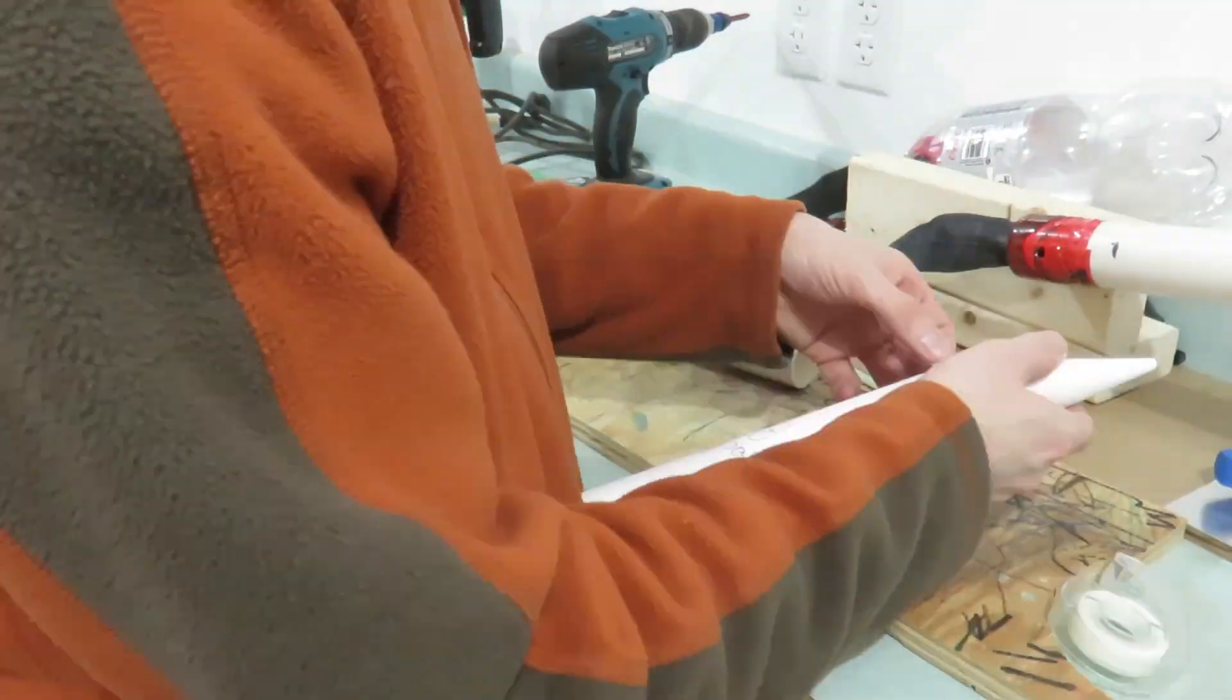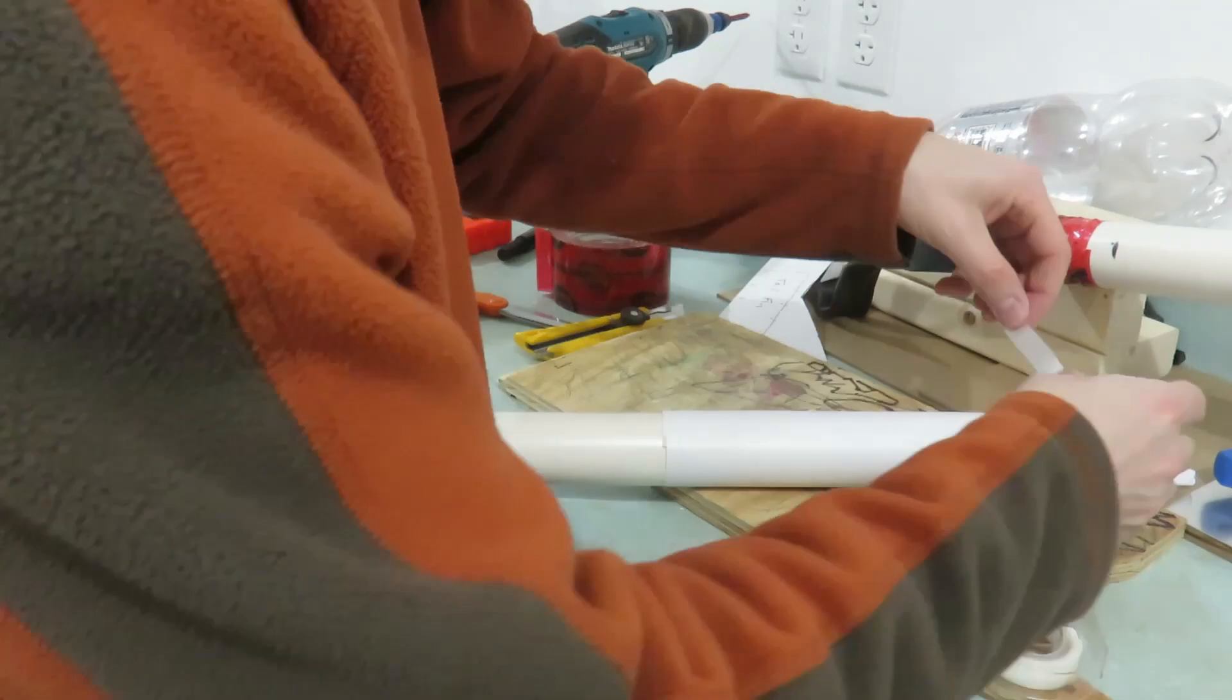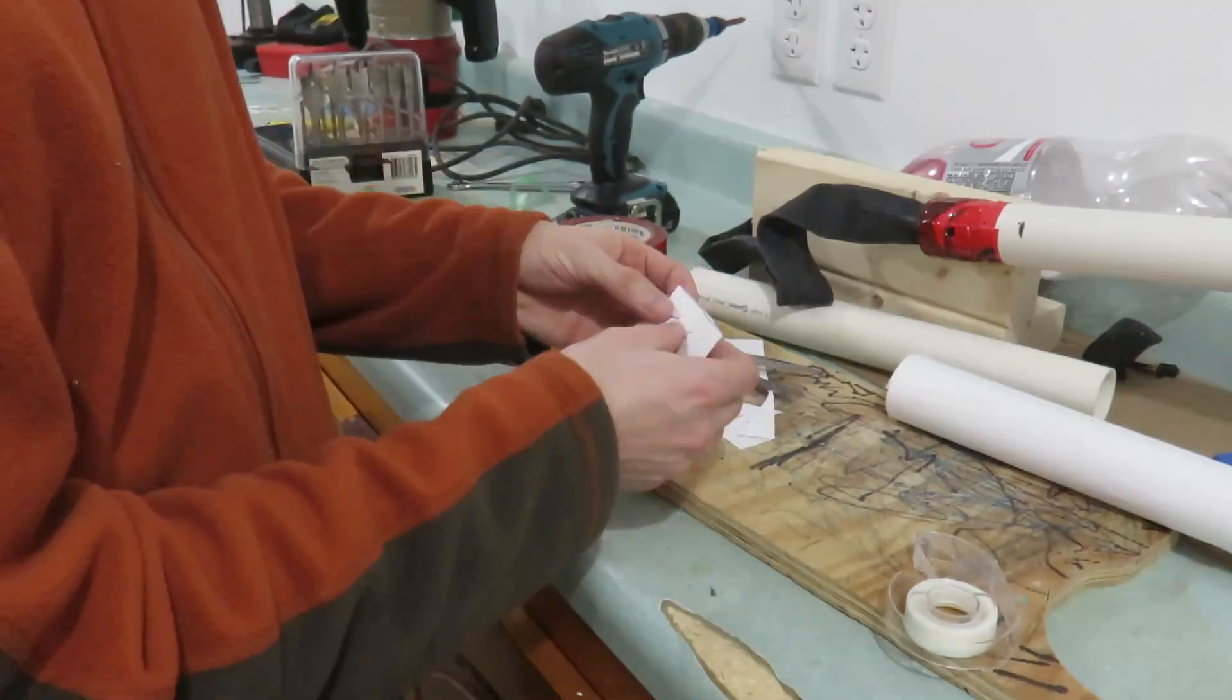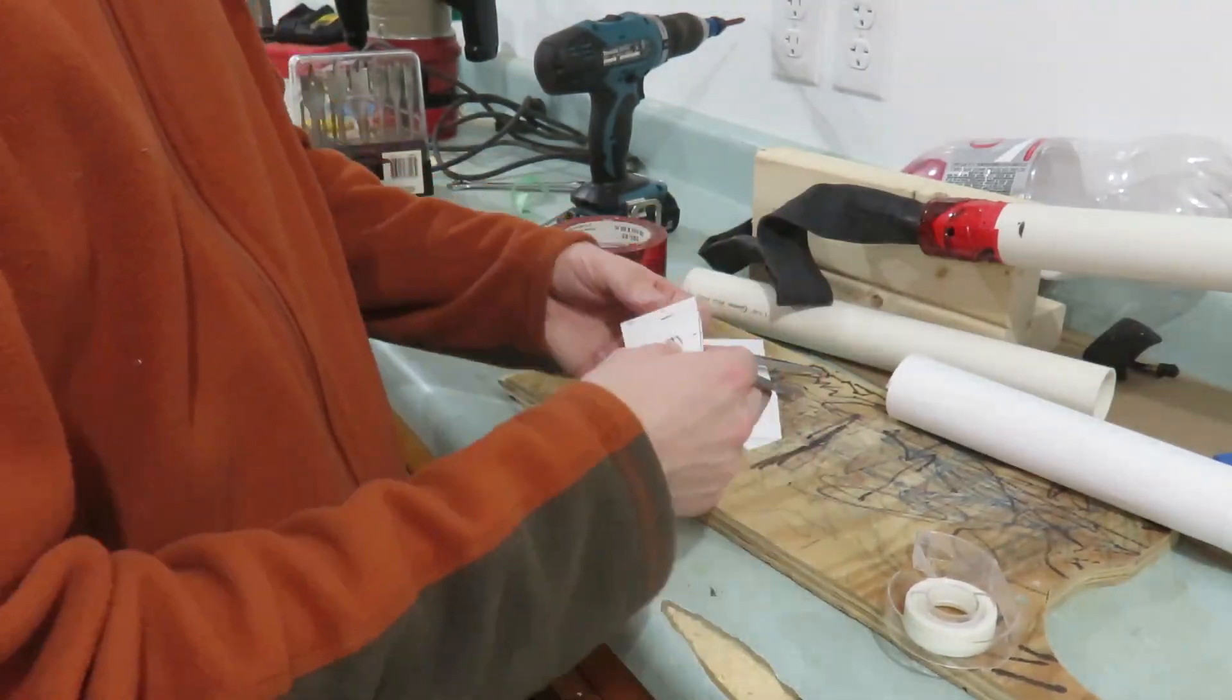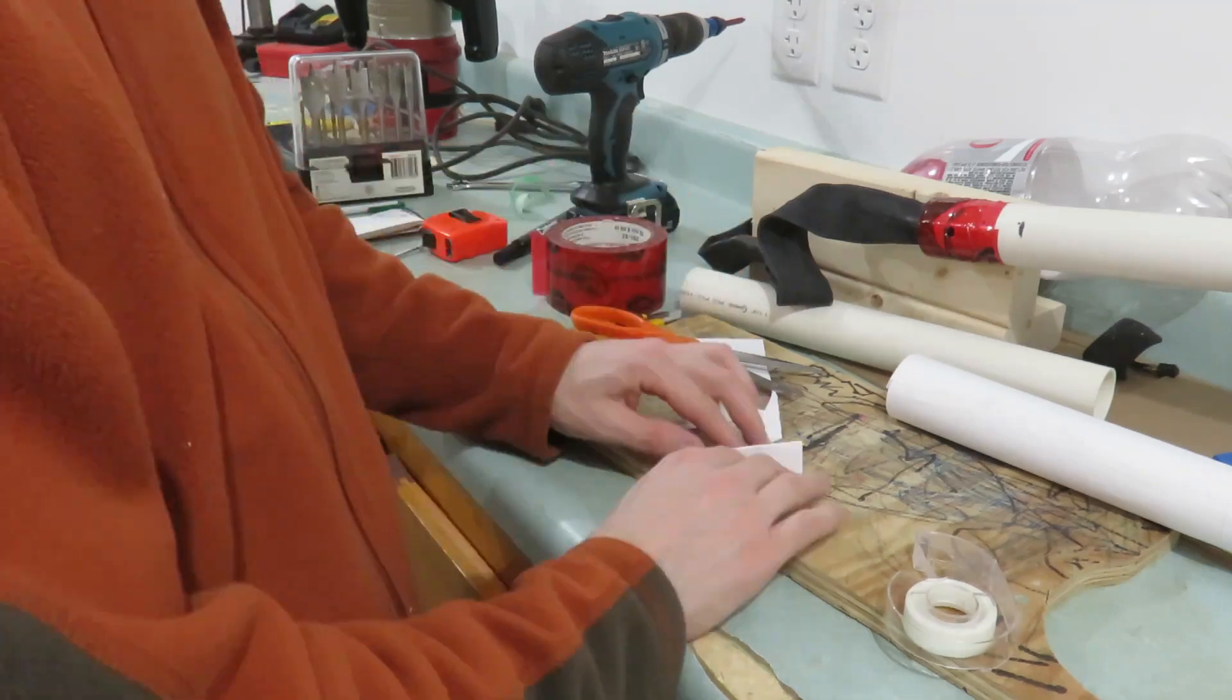With the paper parts cut out ensure that you tape all the seams well. Especially the nose cone as it will need to withstand all the air pressure for the launch.